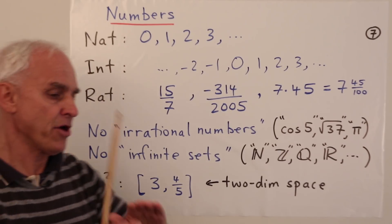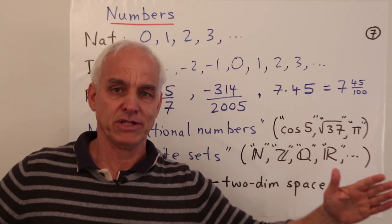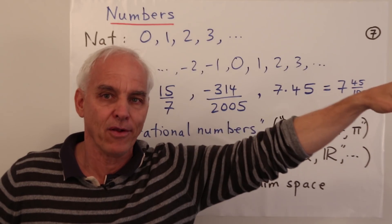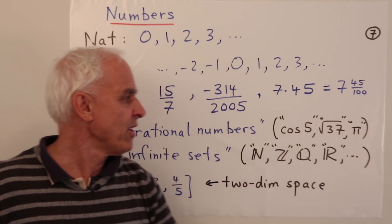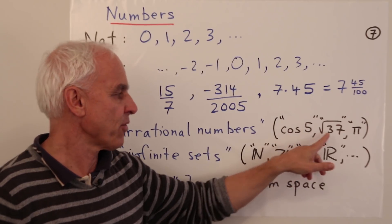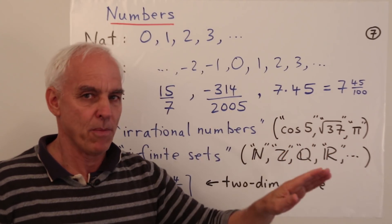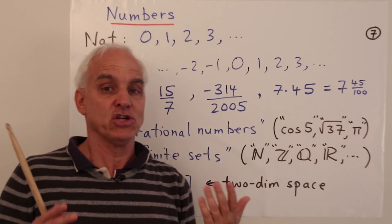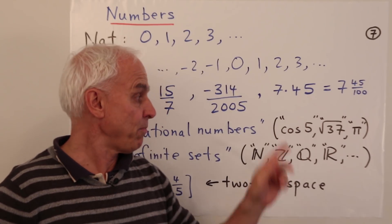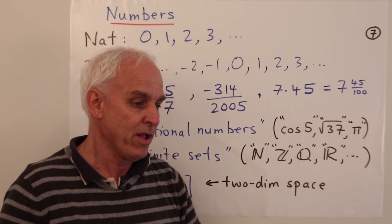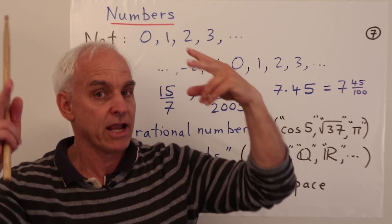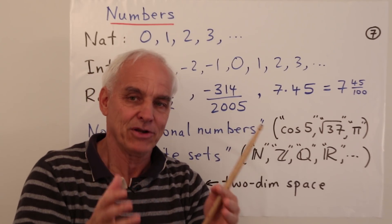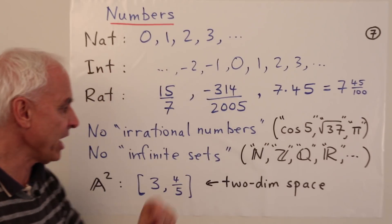What about irrational numbers? There are not going to be any irrational numbers in this course. None. We may mention them occasionally, but we are not going to be using irrational numbers. Cosine of 5, square root of 37, pi, etc. No. And if we have to talk about these things with reference to the standard theory, let us agree to put them in quotes. So we'll put them in quotes so that we all know that we are just temporarily talking about things which are not in our system clearly definable.